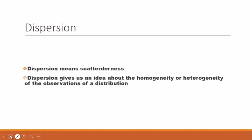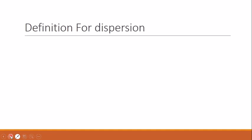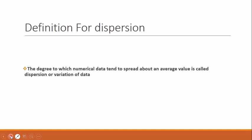Many mathematicians have proposed different definitions for dispersion. One precise definition is: the degree to which the numerical data tend to spread about an average value is called dispersion or variation of the data. Now let's move on to different measures of dispersion to find out whether this definition holds true.